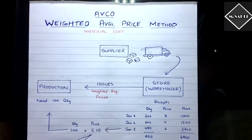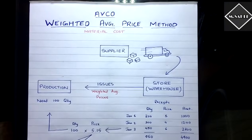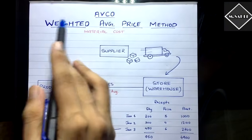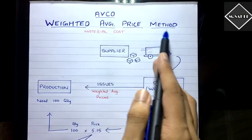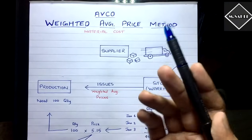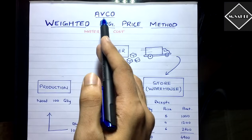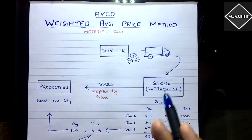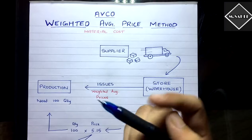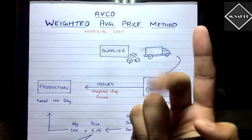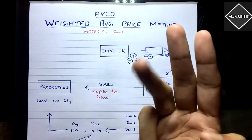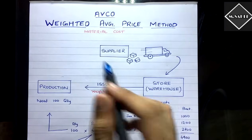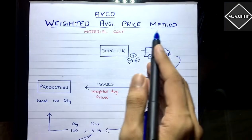In this video we are going to see another method of inventory valuation — the Weighted Average Price method, also called the Average Cost method or AVCO method. In previous videos we have seen FIFO, LIFO, and the Simple Average Price method.